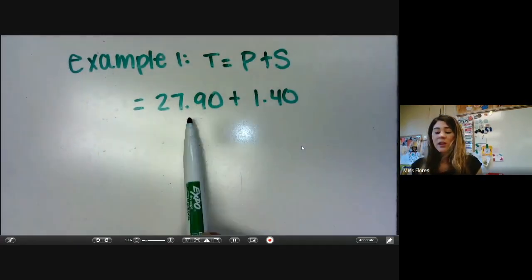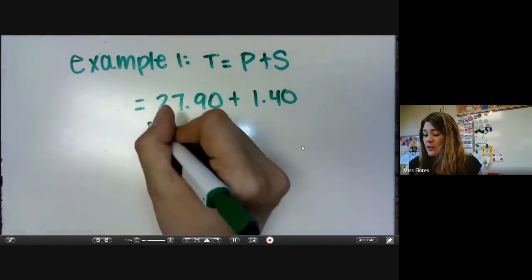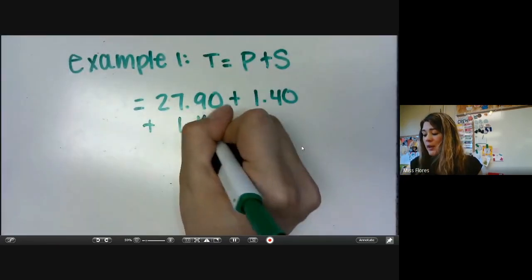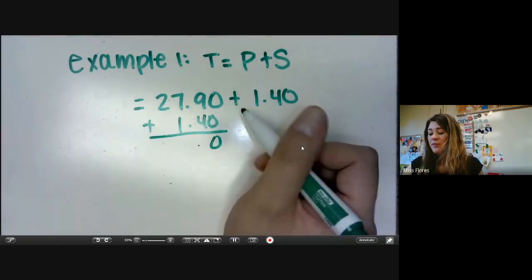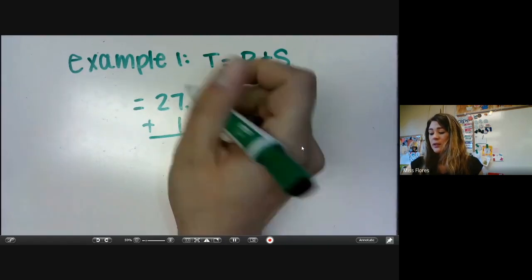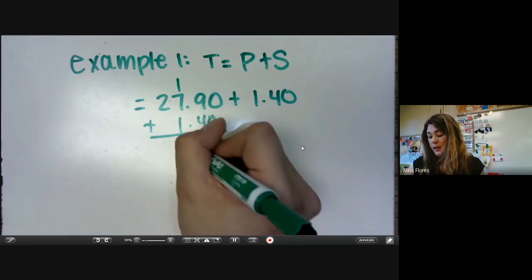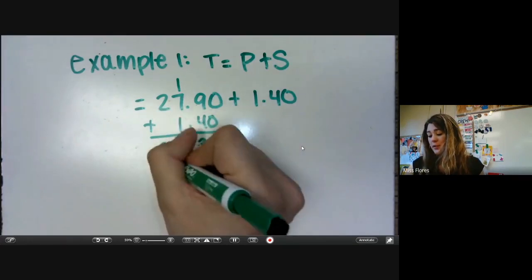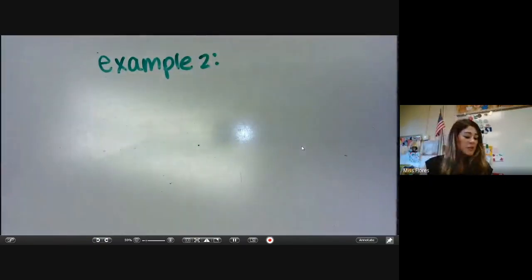That means that we're basically plugging in these numbers into our formula. So let's work this out together, and they work it out for you in the book as well. 0 plus 0 is 0, 9 plus 4 is 13, 7 plus 1 is 9, and 2 plus 0 is 2, so then you get $29.30. Let's look at example two.